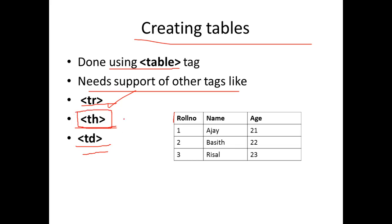This tag is the td tag. TD stands for table data. Table data — like this data is 1, Ajay, 21. This data is 1, this data is 1 — td tag is used.